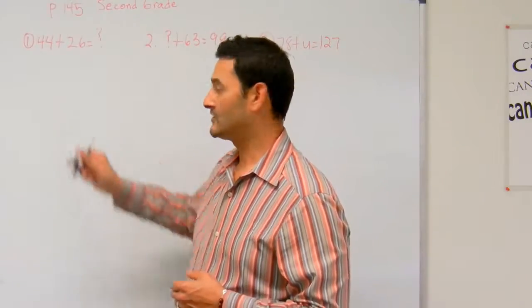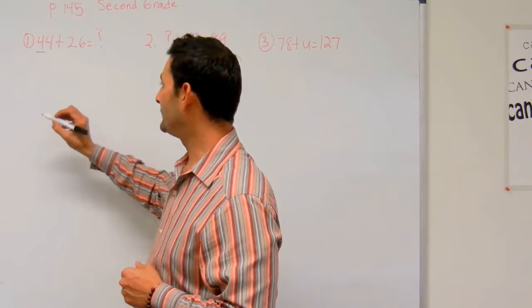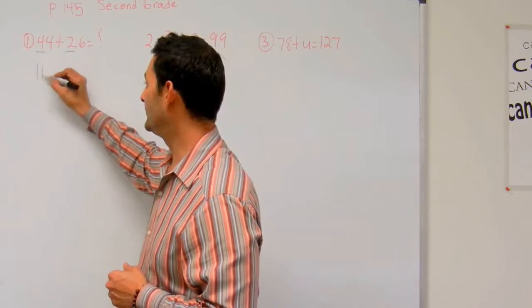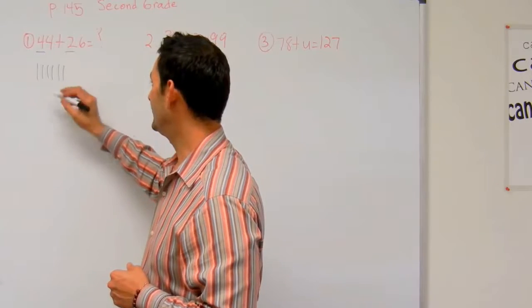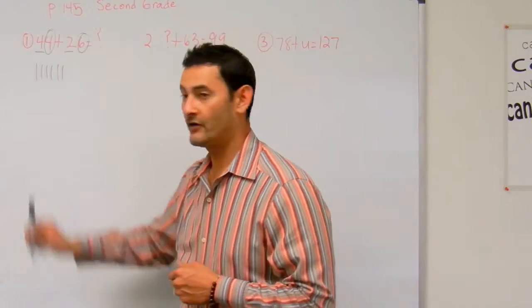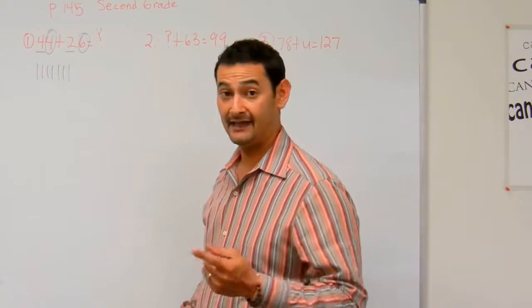Let's get started. Here I have 44 plus 26. I've got four bundles of 10 here, and two bundles of 10 there. That's 1, 2, 3, 4 and 1, 2. Let's look at the ones place. I've got a 4 and a 6. Four and six make 10.